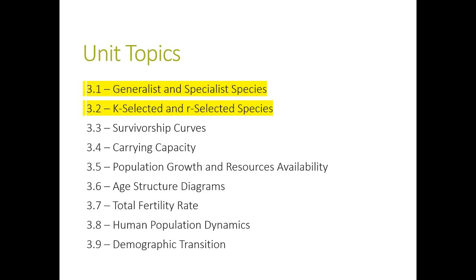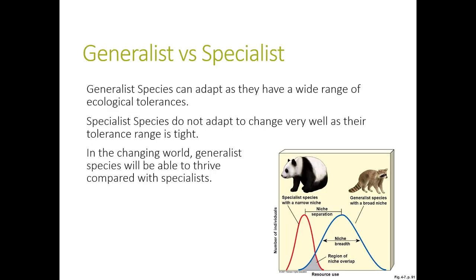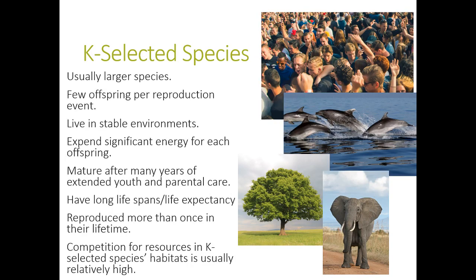If you remember from the last unit, generalist species essentially have a large range of ecological tolerances, so they don't have nearly as much competition because they're not as specific. Specialist species typically have a small tolerance range and have more competition. When looking at habitat disruption, generalist species will do better than specialist species.